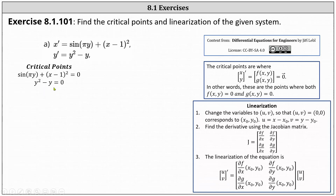When y is equal to zero, the first equation becomes sine zero plus the square of x minus one equals zero. Sine zero is zero, and the square of x minus one is zero when x is one. This gives us the critical point one comma zero. When y is one, the first equation is sine pi, which is also zero, plus the square of x minus one equals zero, and therefore the second critical point is one comma one. So we have two critical points: one comma zero and one comma one.